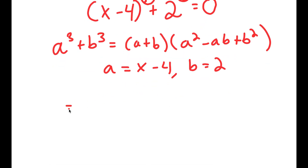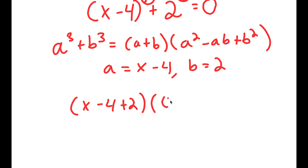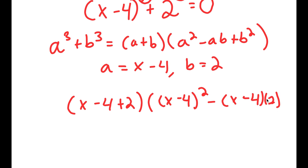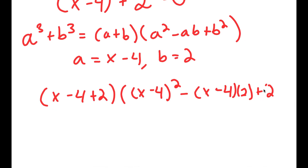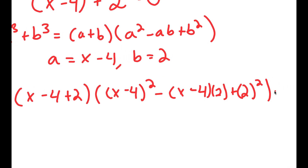So I get x minus 4 plus 2, times x minus 4 squared minus x minus 4 times 2 plus 2 squared, and this is equal to 0.